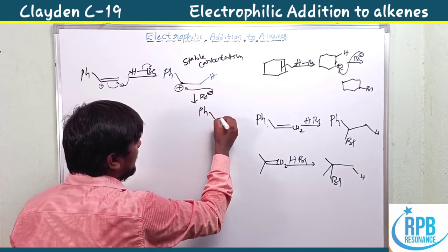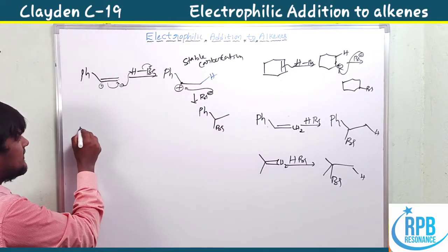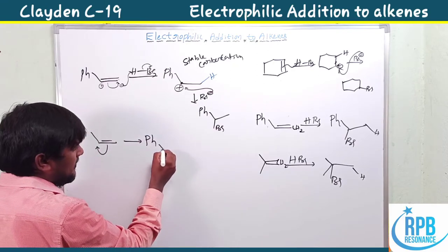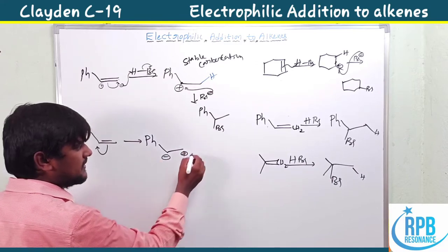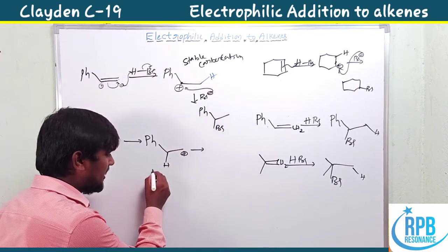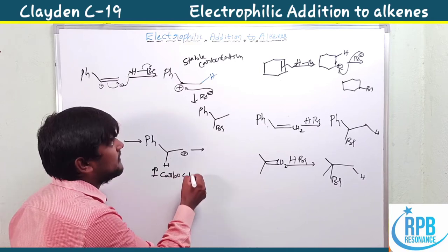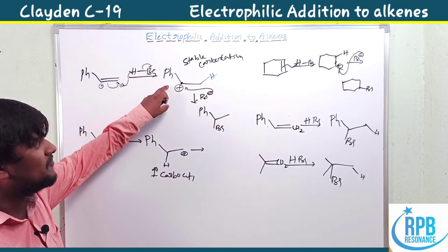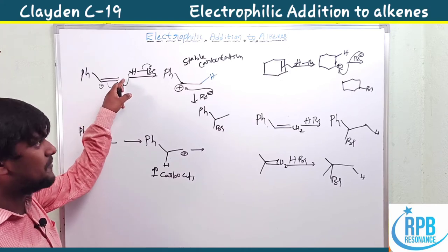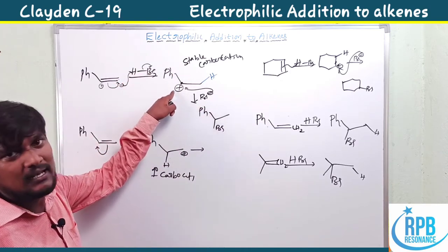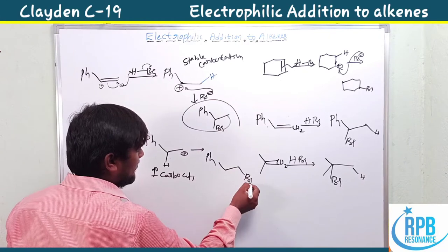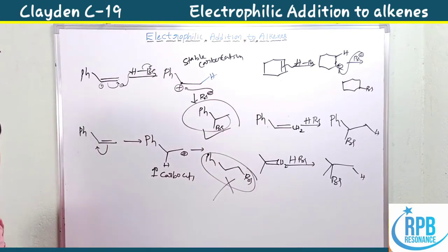This is the first type of product. In the second type, the electron shifting is opposite — it becomes negative and positive in the reverse direction. The H⁺ attacks the other end, giving a primary carbocation with no benzylic stabilization. Primary carbocation is less stable than benzylic carbocation. Therefore, due to benzylic carbocation stabilization, the terminal end abstracts the proton and the nucleophile attacks the more stabilized carbocation — this is the major product.